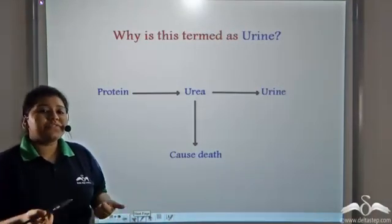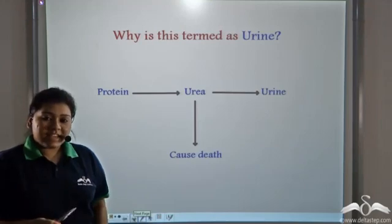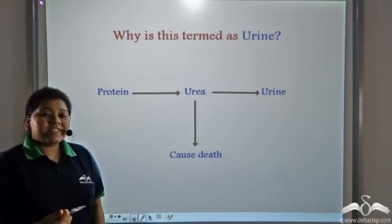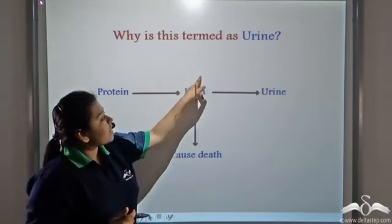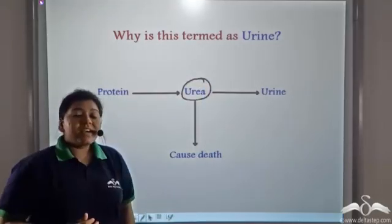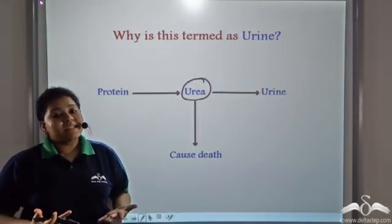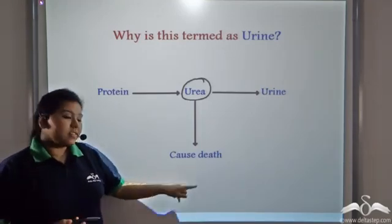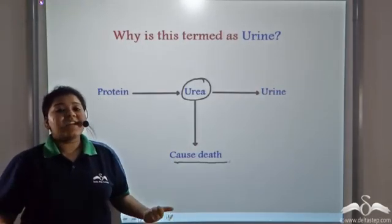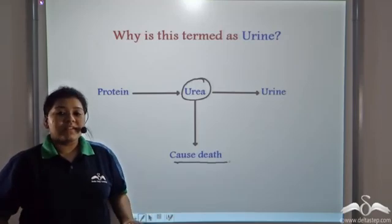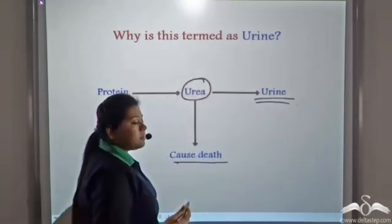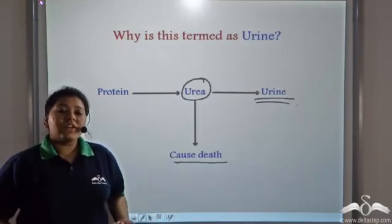Why do we term this fluid as urine? The protein part of the food that we have gets converted mostly into a chemical known as urea. Urea, if present in greater amount in the body can cause death. So kidney helps in flushing out of this urea out of the body in the form of urine. Urine comes from the word urea. So urine is excreted out of the body.